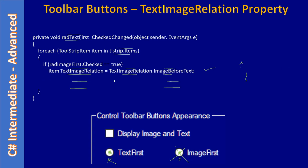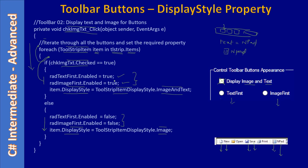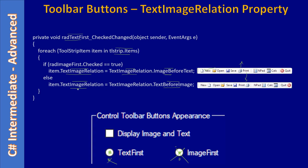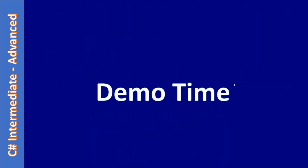So there are two key properties to remember: DisplayStyle, and TextImageRelation. You can see the difference — with ImageBeforeText the image comes first, and with TextBeforeImage the text comes before the image. Now it's demo time — we will go to Visual Studio and implement those three event routines.